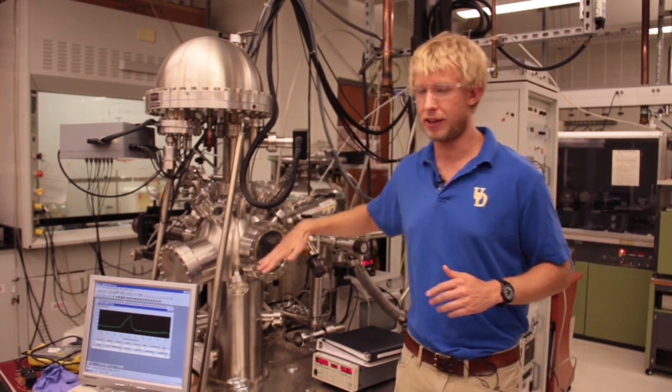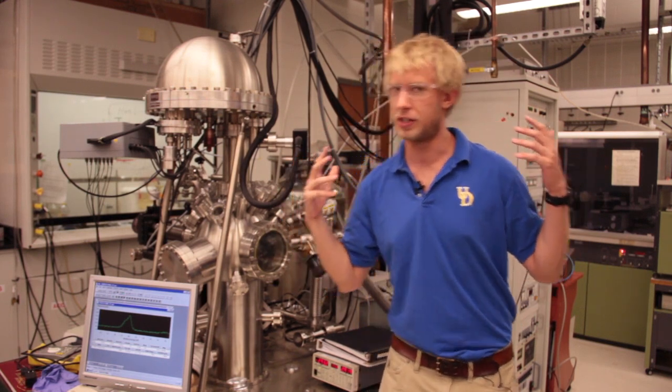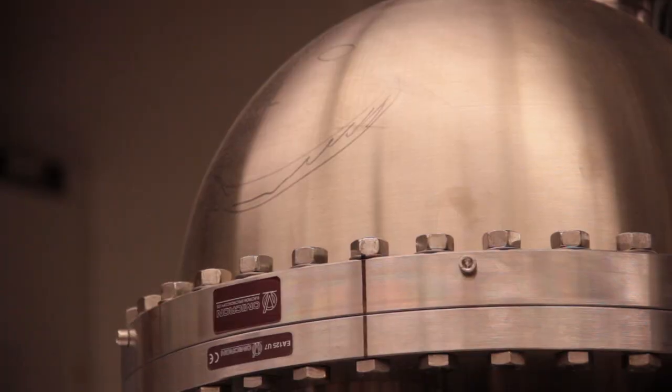So these X-rays come in and they knock off our electrons. The electrons go shooting off in all directions, but we have a lot of electrons come shooting up this tube.